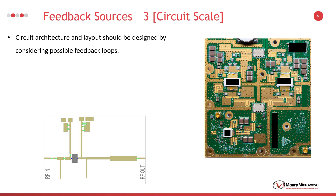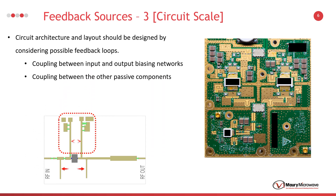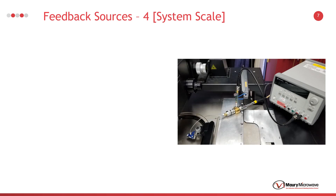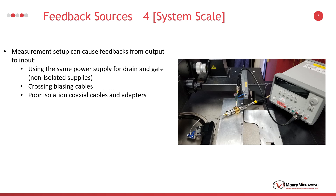There are also feedback loops at the circuit level. The most common ones are coupling between the biasing networks and matching networks. Poorly designed metal enclosures can also cause feedback loops due to in-package radiations. A large signal measurement setup is the system example where I explained some feedback sources. The most common feedback source in a measurement setup is non- or poorly isolated power supplies and test signal leakage of coaxial cables, especially for high power measurement setups.